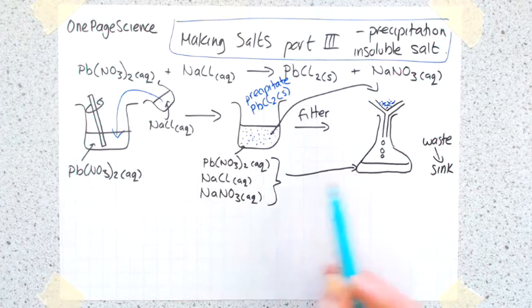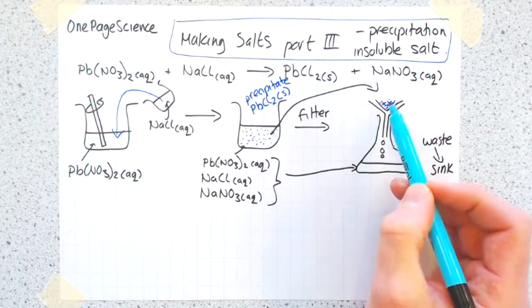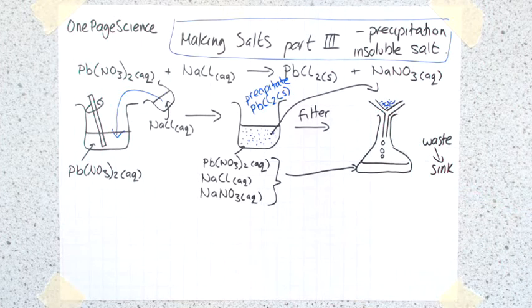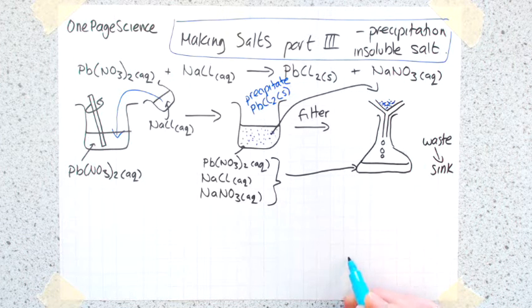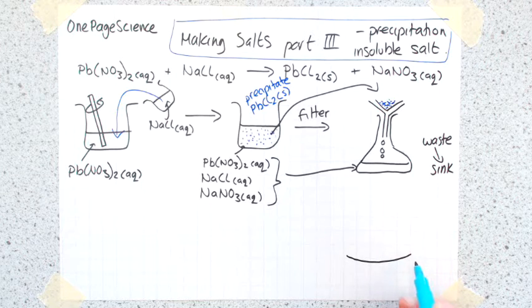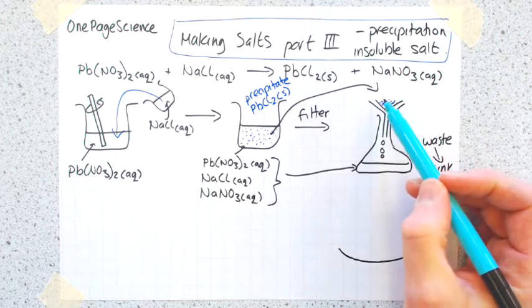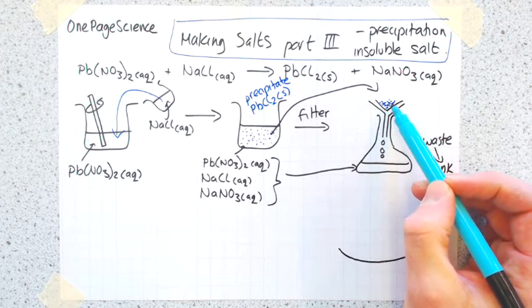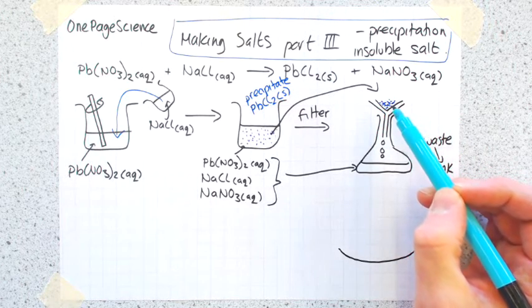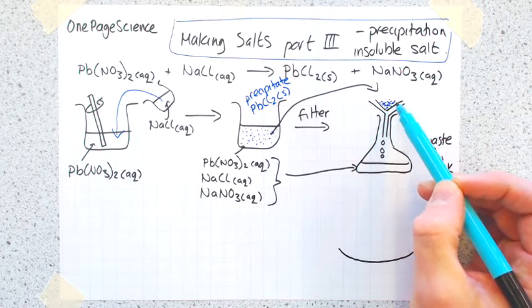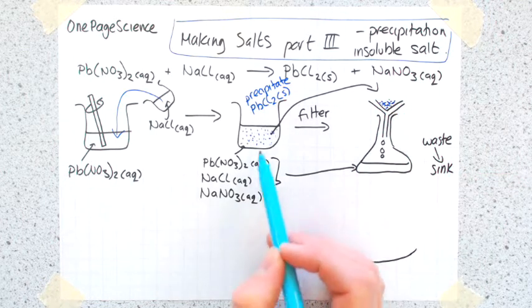Either leftovers from the reaction or byproducts have now been separated, and what we're left with is our solid that we want. Then we take that solid - wait, don't forget a step here. What we're going to have is our solid that is still wet.